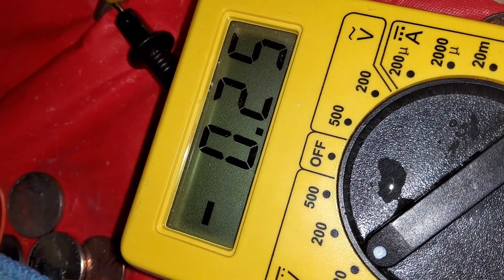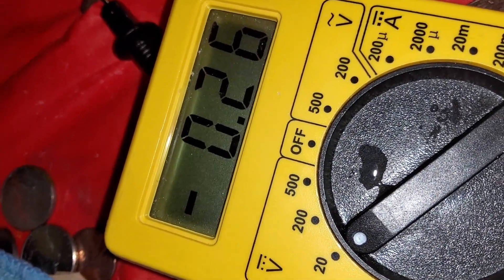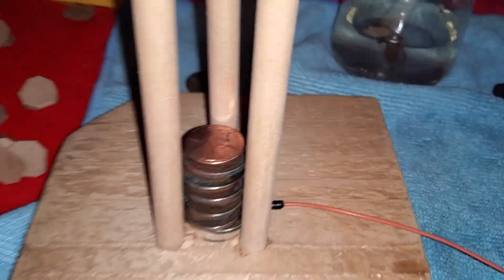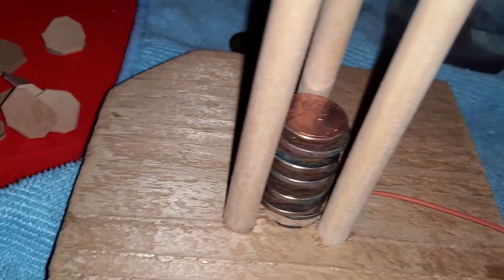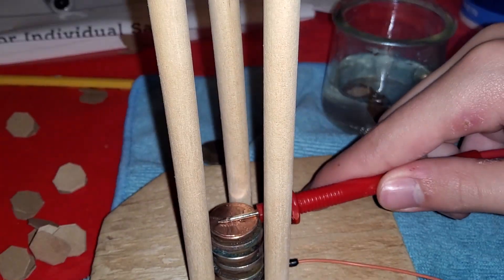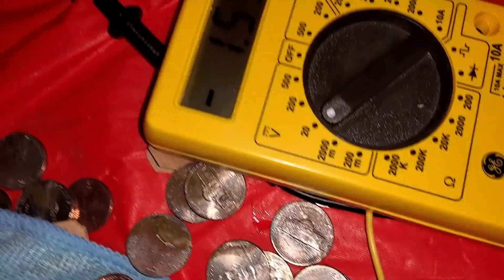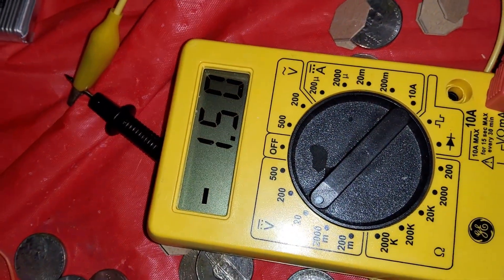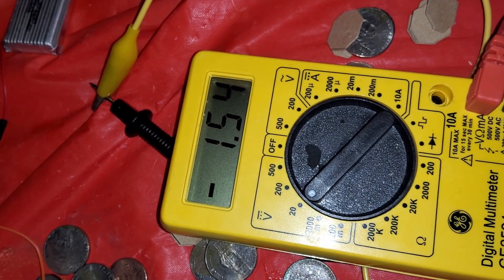These two cells stacked up at 0.2 volts. I just stacked some more batteries. This voltage is higher than an AA battery. Let's finish the stack.